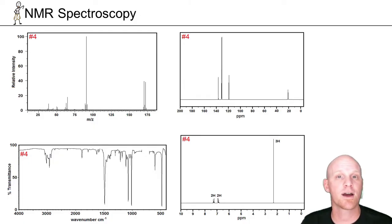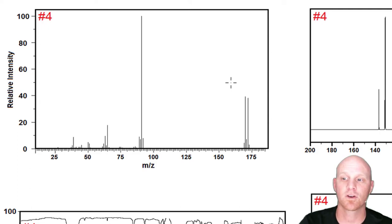The mass spectrum first, then IR, then the carbon-13 NMR, and then the proton NMR. In this case, I don't even have to give you a formula. Without a formula, we can't calculate the degrees of unsaturation or anything like that. We'll start with the mass spectrum.